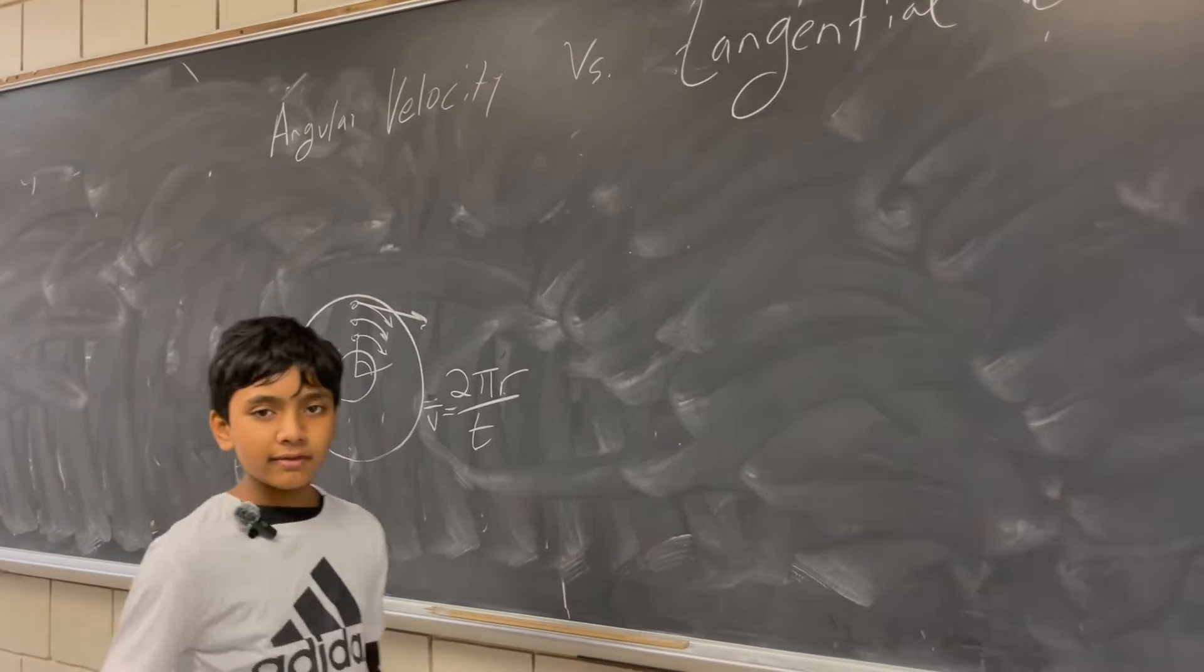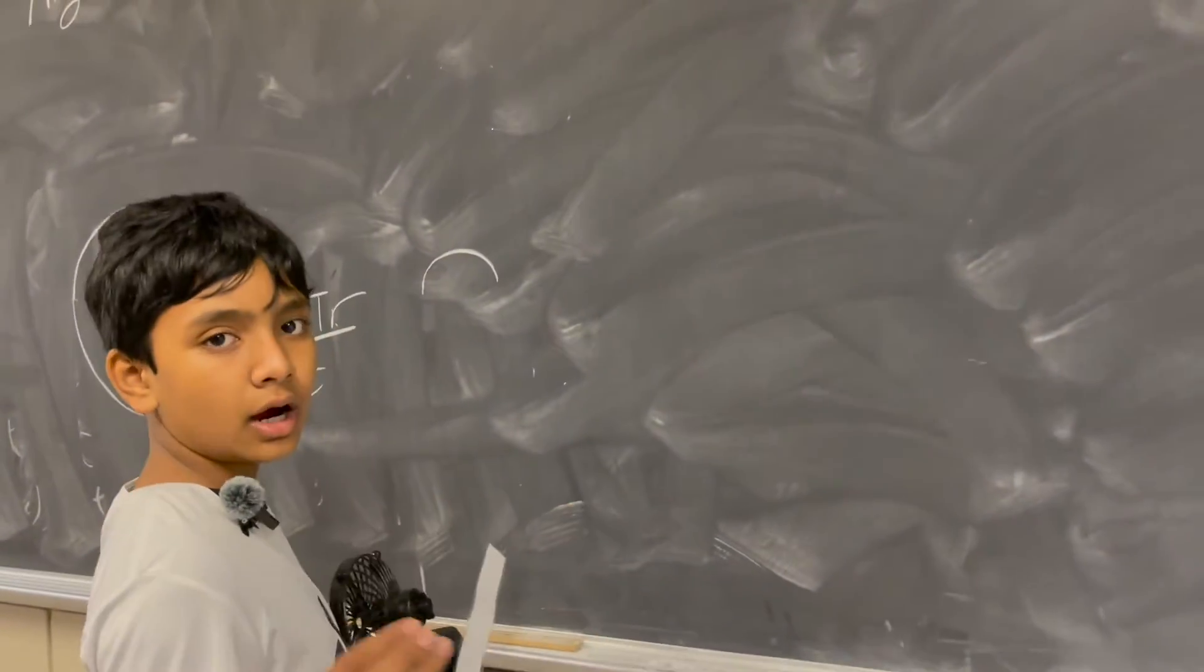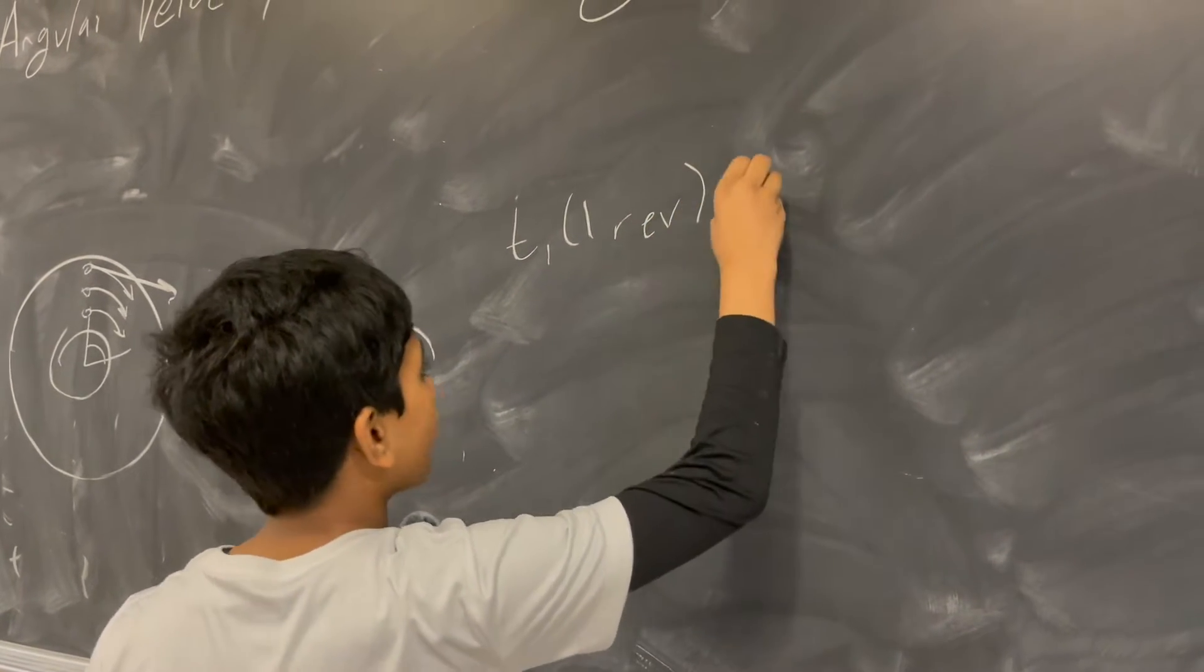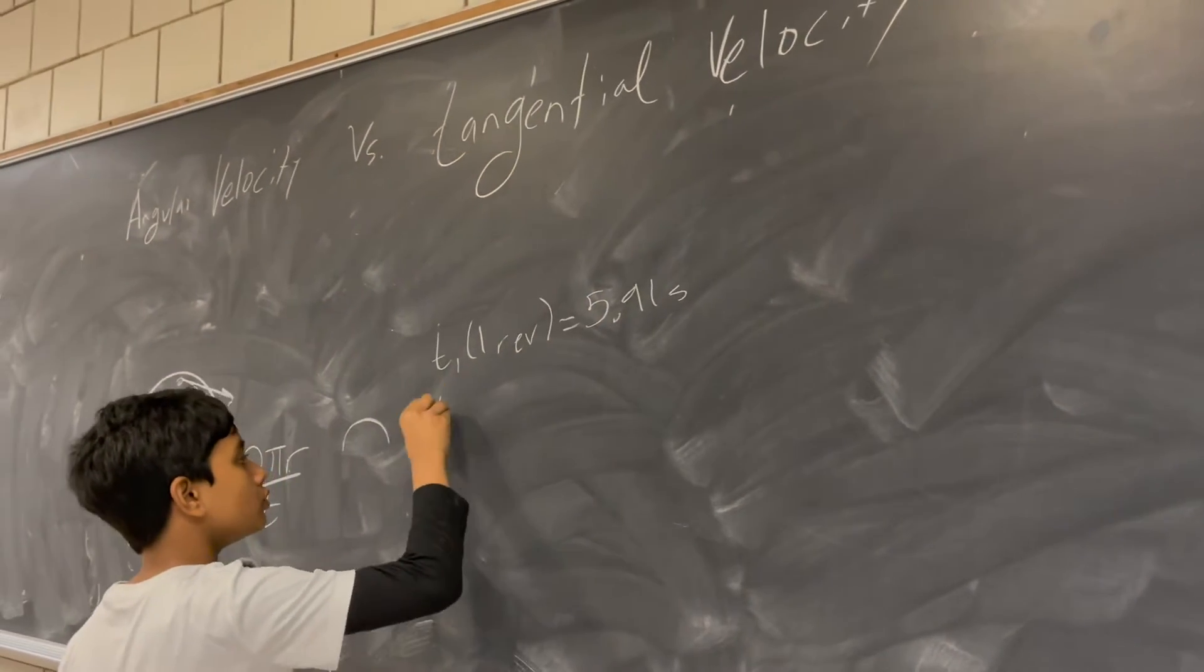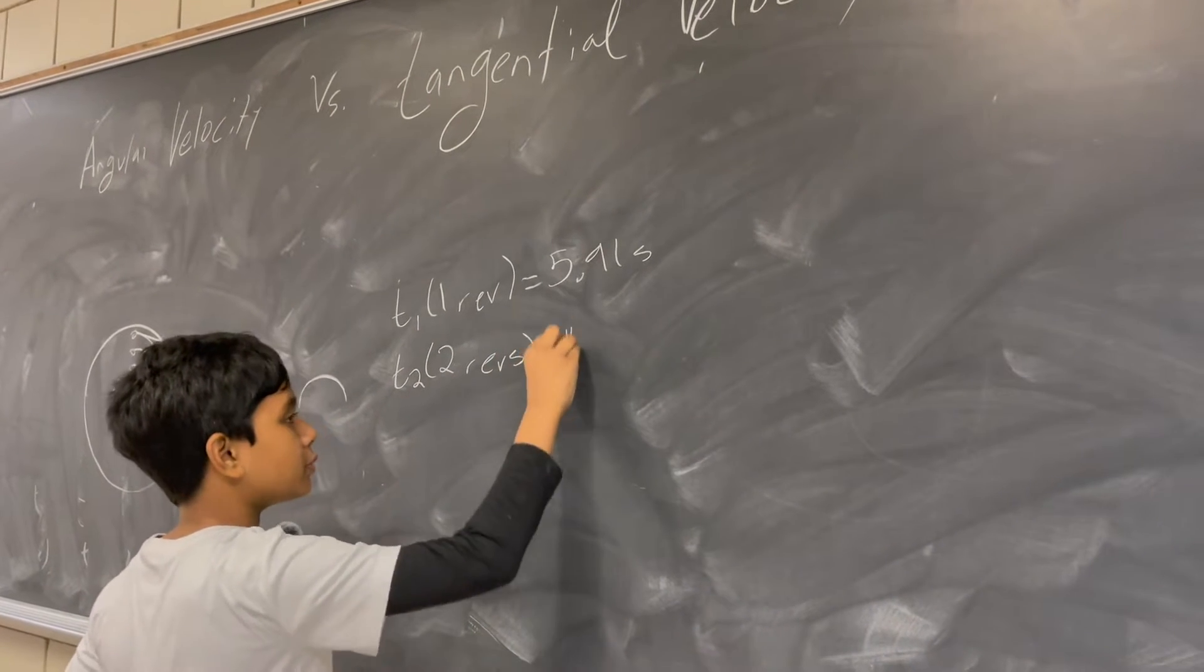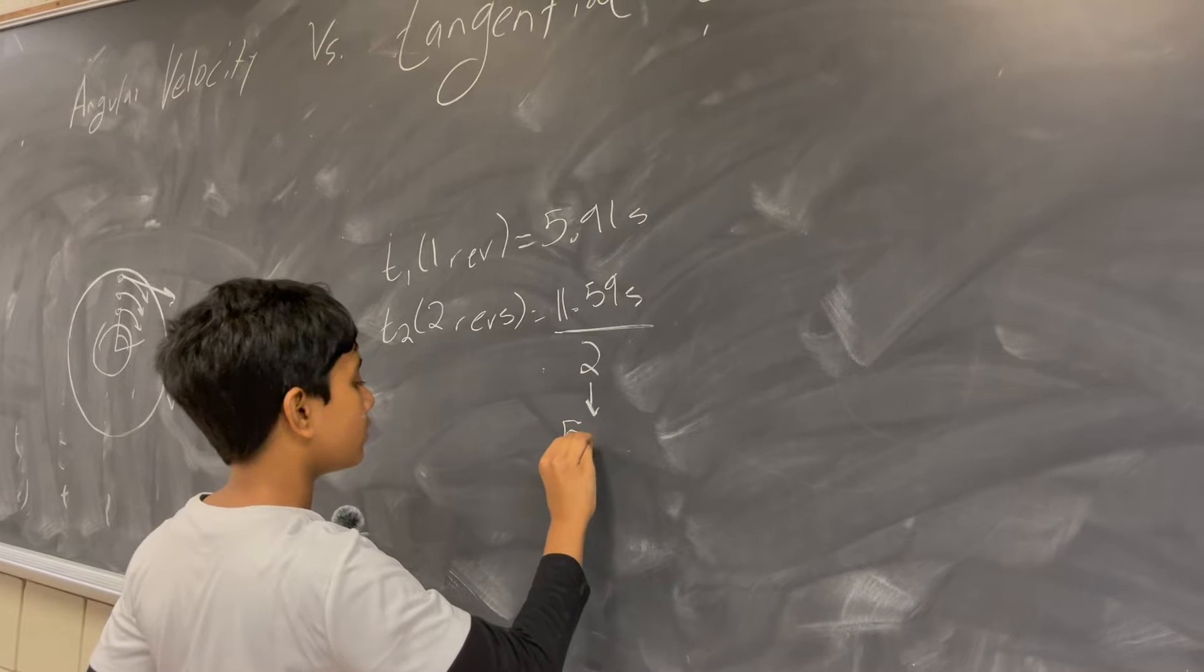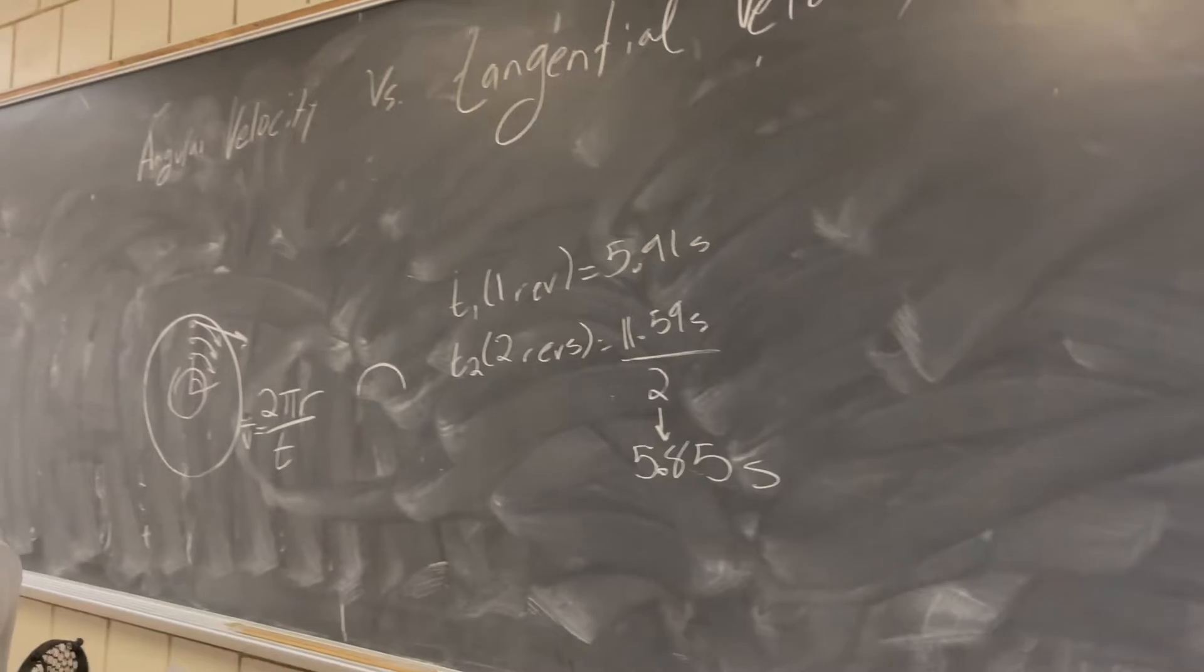So what I've done is I've measured two quantities. Let's see our times. Our time measurement one was for one revolution, and it was 5.91 seconds. Time two was for two revolutions, and it was 11.59, but that's for two revolutions, so we divide it by two, and that gives us about 5.845, which I'll just round up to 5.85 seconds per revolution.